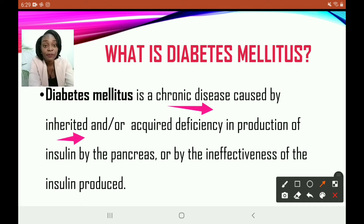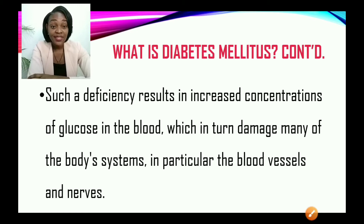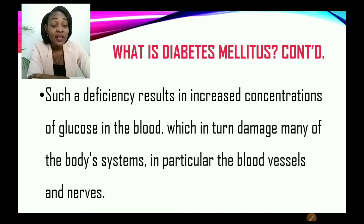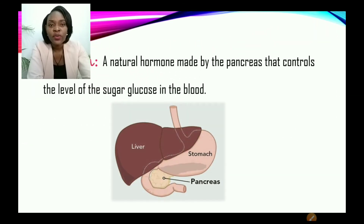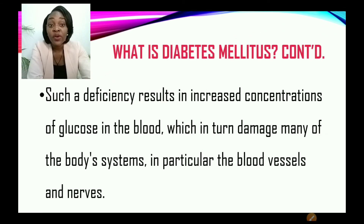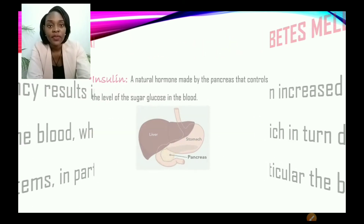Such a deficiency results in increased concentrations of glucose in the blood, which in turn damage many of the body's systems — in particular, the blood vessels and the nerves. And when we refer to glucose there, remember we're referring to blood sugar also.